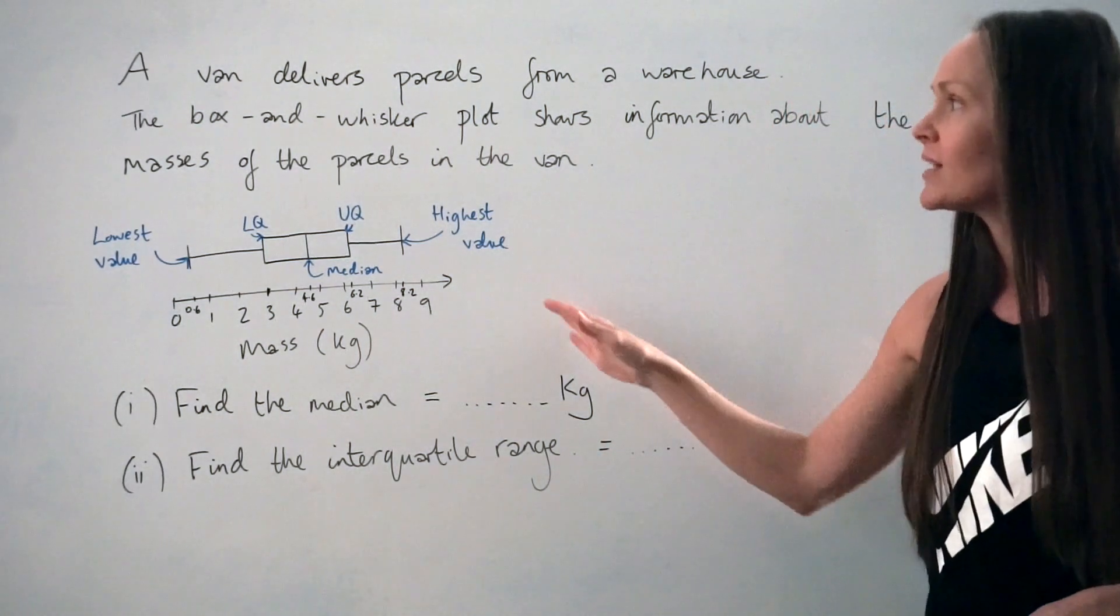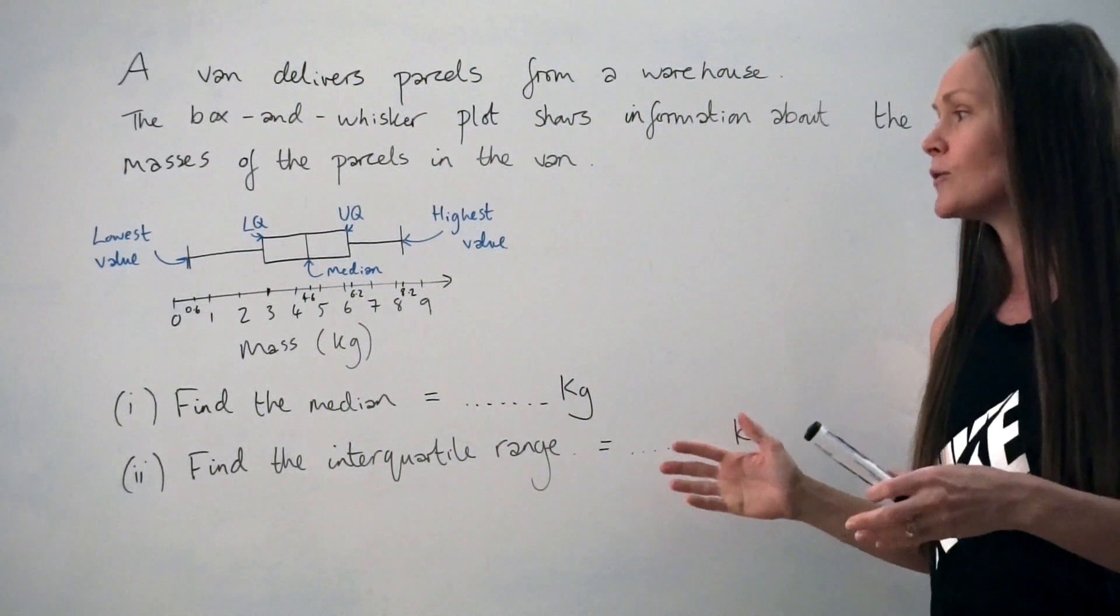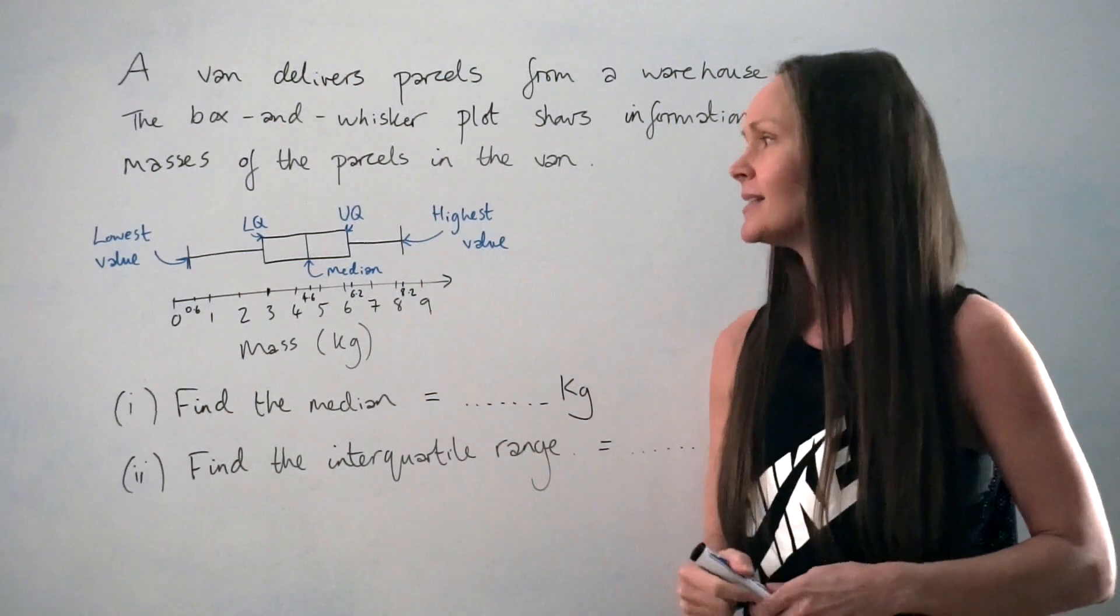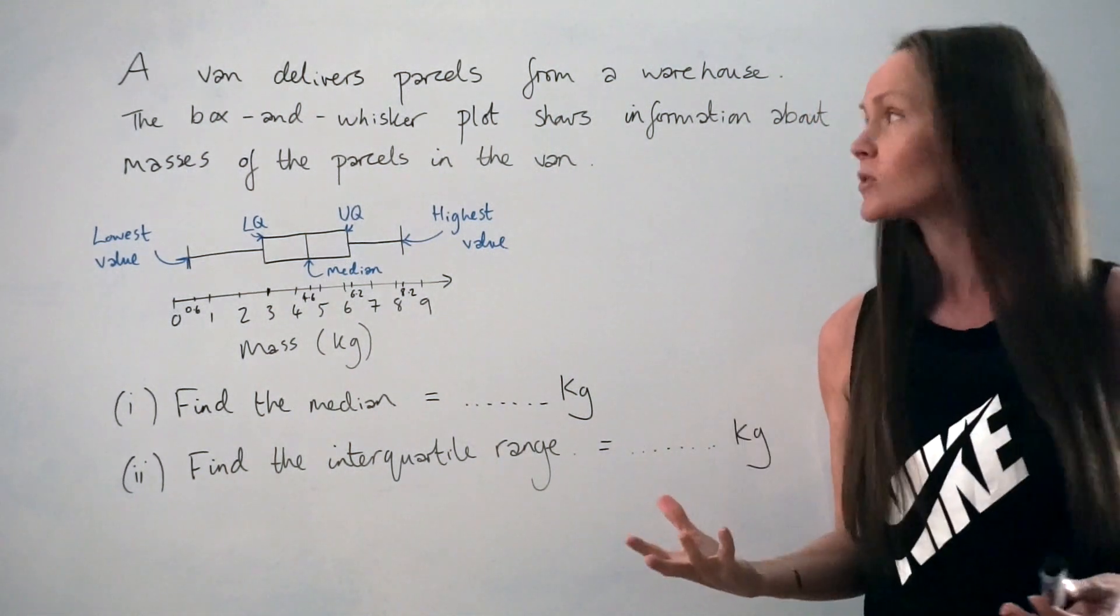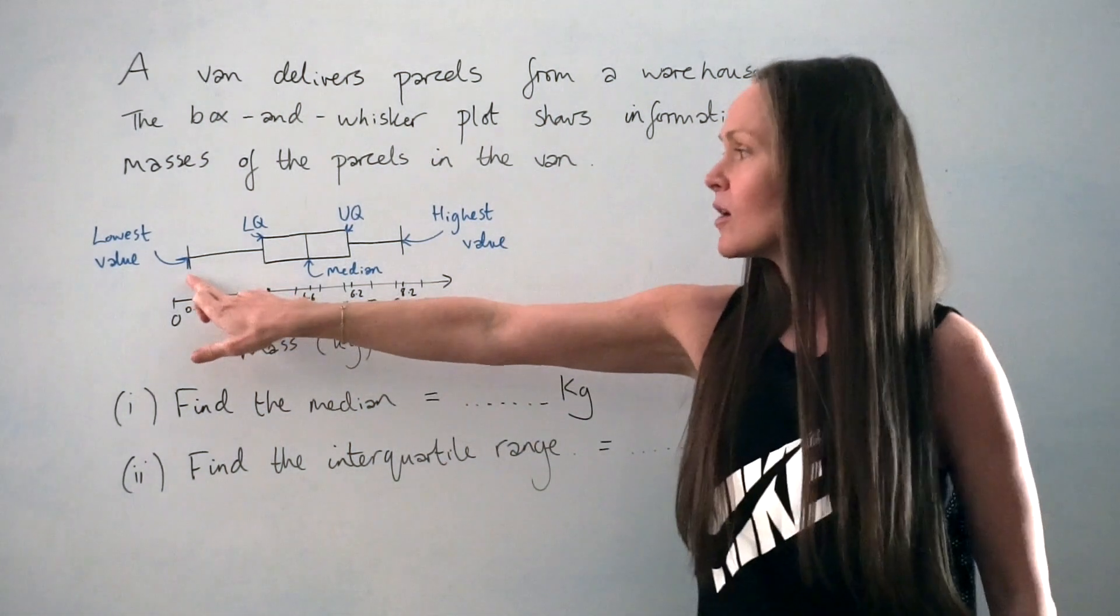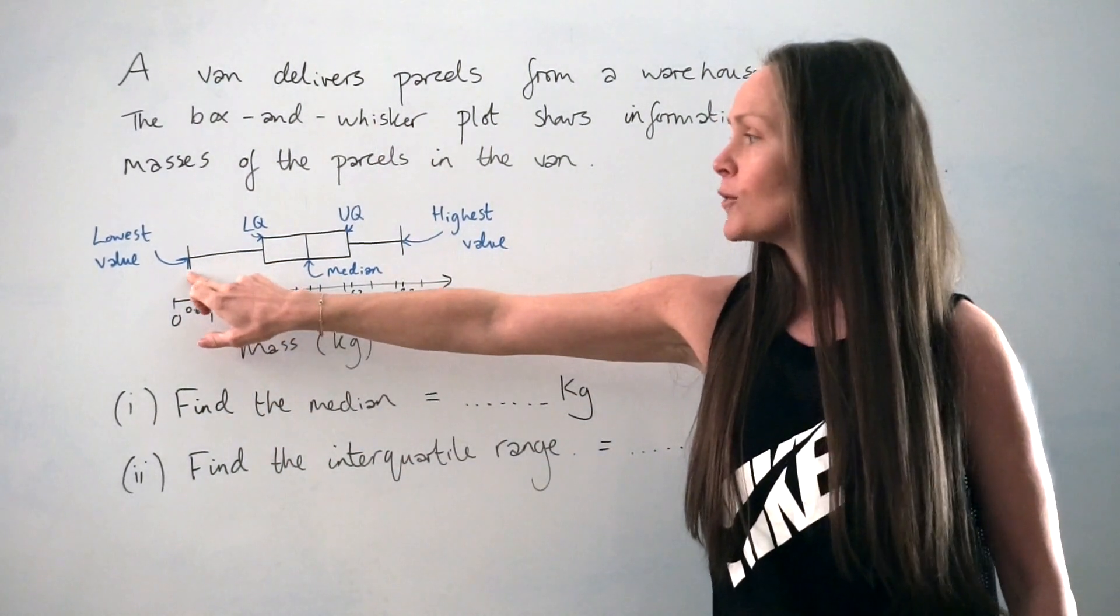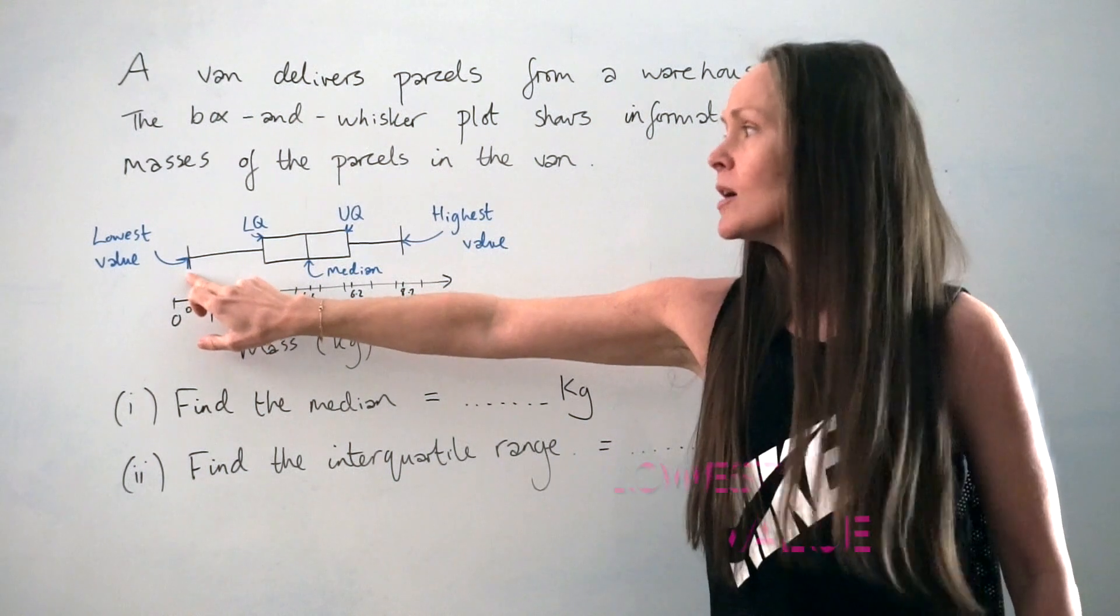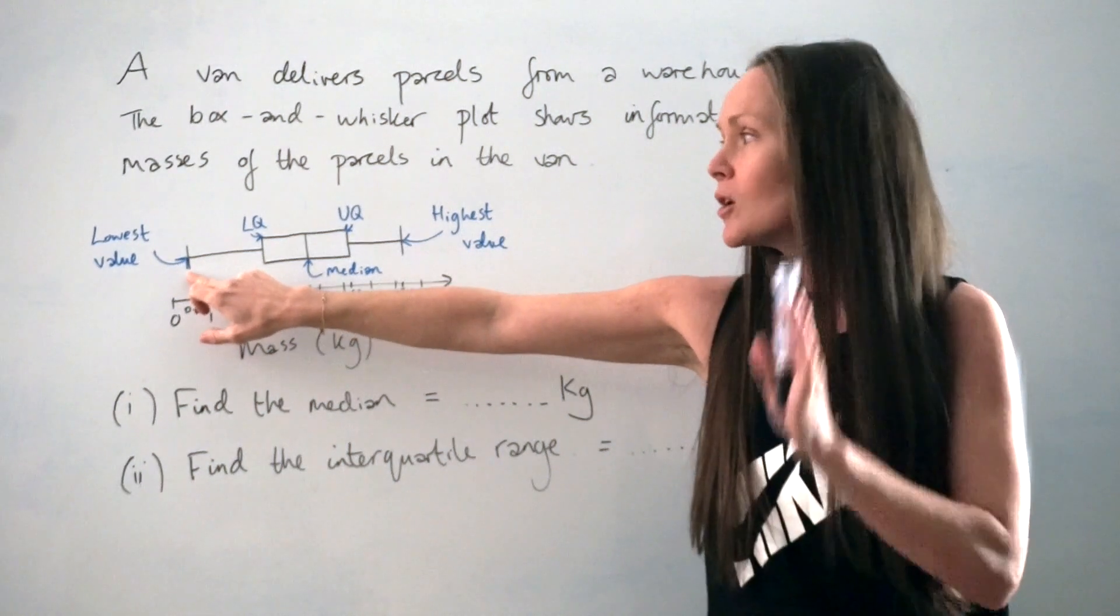So here's my quick sketch of the box and whisker plot. It's just a way of showing the data that's been collected. There are five important points to remember on a box and whisker plot. Starting on the left hand side, the first little line of the plot is the lowest value. So this line here represents the parcel with the lowest mass.